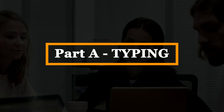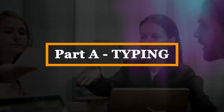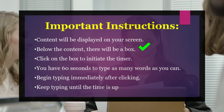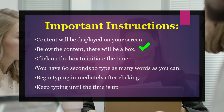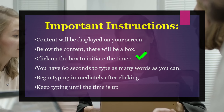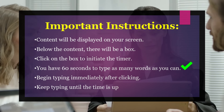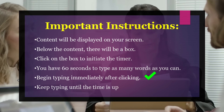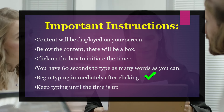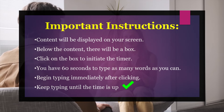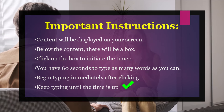Now let's move on to our first section, which is typing. As the name suggests, this section will measure your typing speed. You will see some content on your screen and just below that you will see a box. You have to type the same content in that box. The moment you click on the box and type the first word, your one-minute timer will start. Within these 60 seconds, you will have to type as many words as you can. The idea should be to keep typing until the time is up. Your work will be saved automatically.